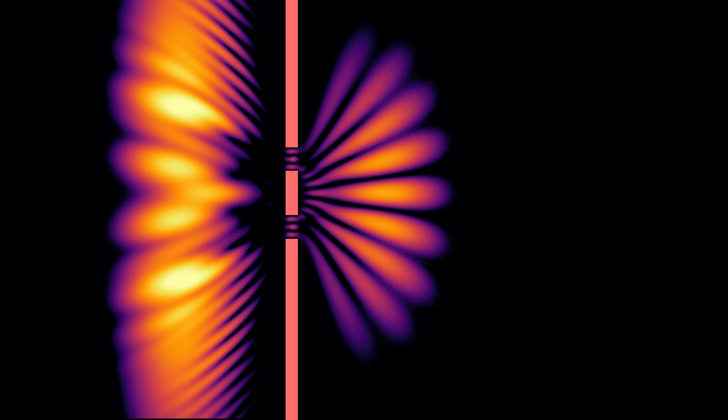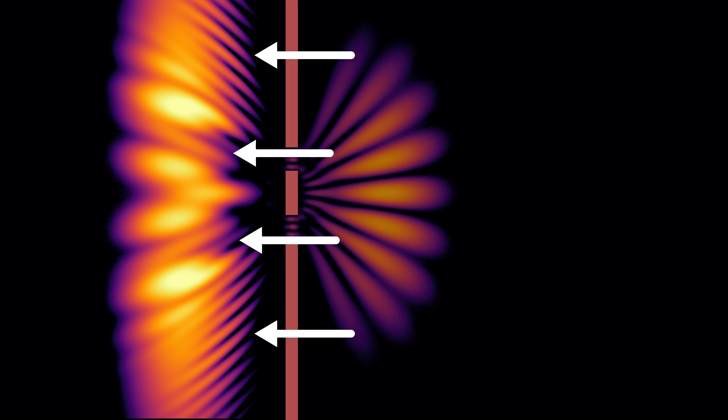The electrons spread out vertically and interfere at the same time. Look at the reflected part. The reflected part shows interference patterns too.